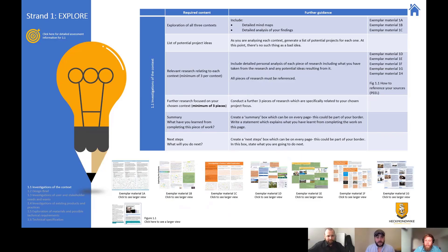So hopefully that was helpful to all students in the cohort. Section 1.1 - after you've created your mind maps, how to structure your work, what criteria we'll be looking for to get those top band marks, and what effective or authentic research looks like when feeding into your design brief, which is in 1.2 - that will be our next video. Thank you very much, everybody.